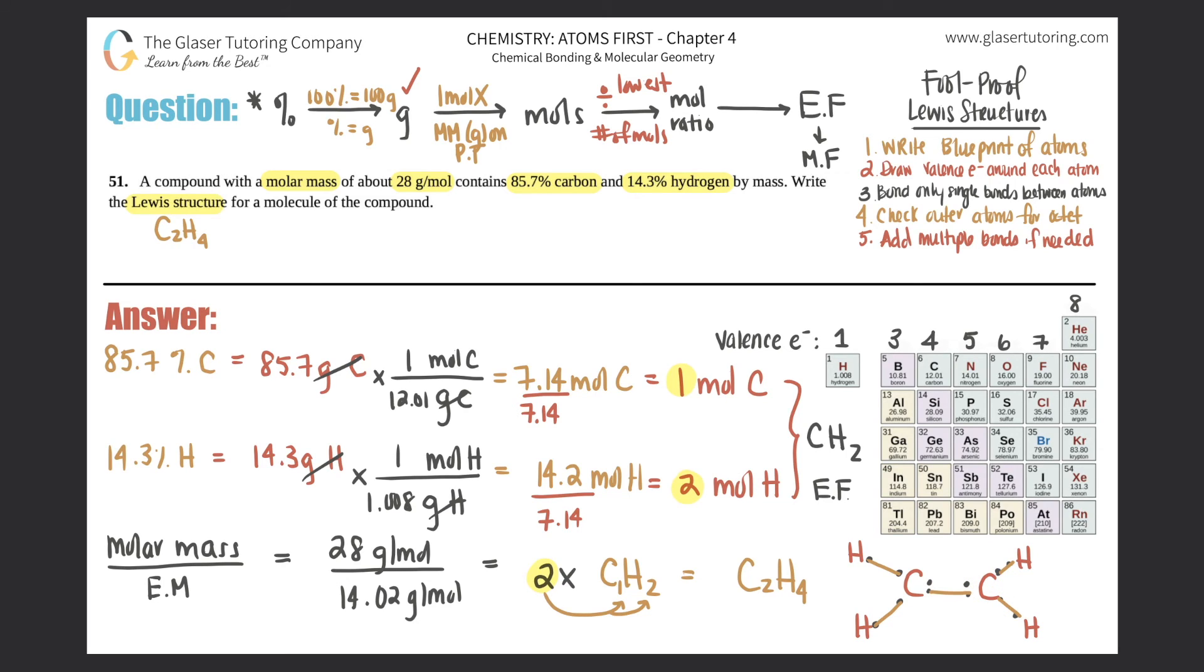So you're going to need a double bond, and now you have the octet rule, right? This carbon now has two, four, six, eight, and so does the other one. So that's it! 51 is done.